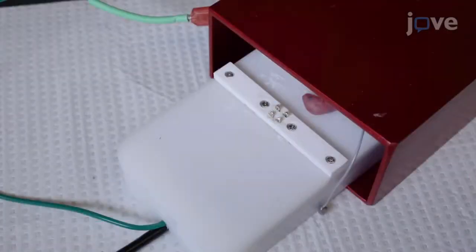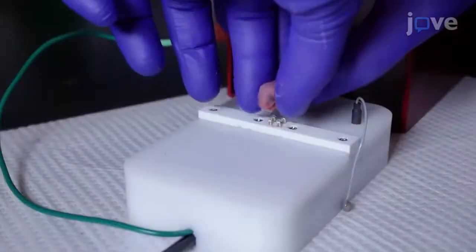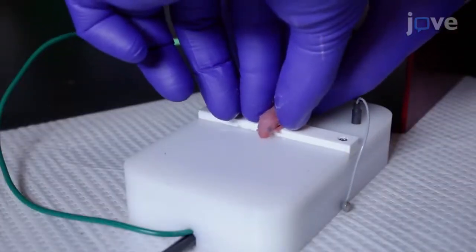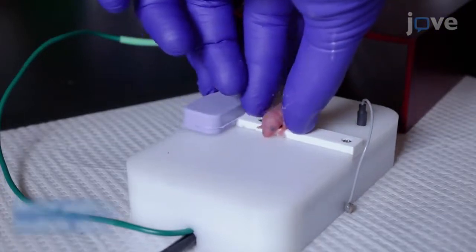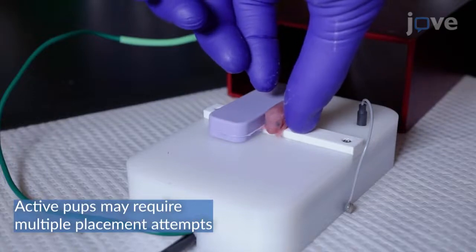When each electrode is completely covered with gel, place the neonatal mouse pup onto the platform in the prone position with the head of the pup facing the outgoing USB edge of the platform, with each electrode covering a portion of the pup's upper thorax.